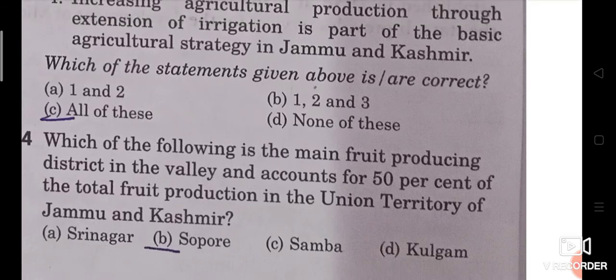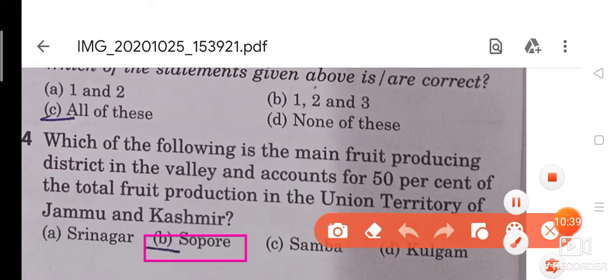Question 14: Which of the following is the main fruit-producing district in the valley and accounts for 50% of the total fruit production in the union territory of Jammu and Kashmir? This is a very important question with high exam probability. The right answer is Sopore. Sopore is the right answer.